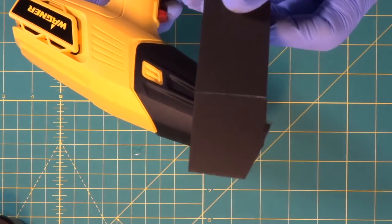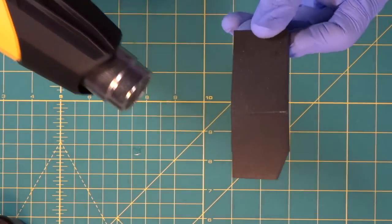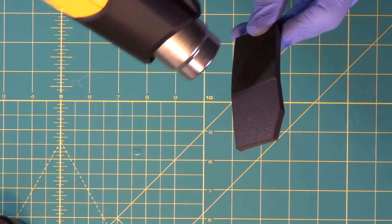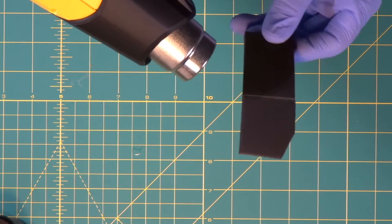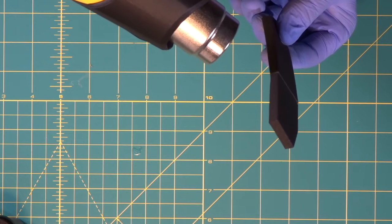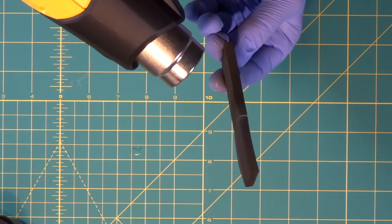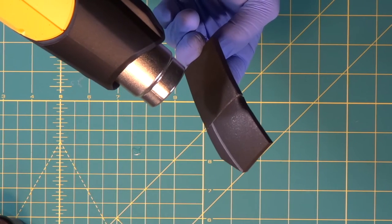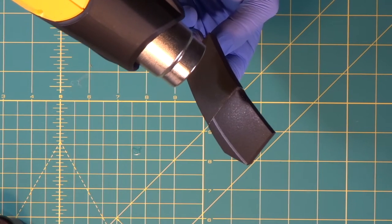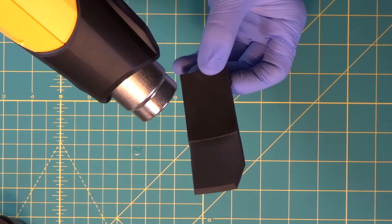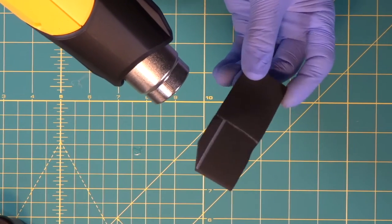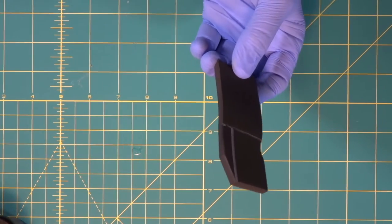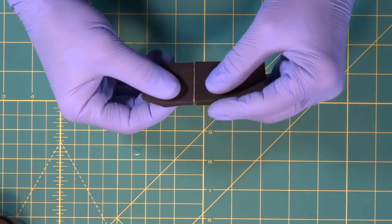The seam is already starting to come apart. Right in the middle there. Now if we keep going, that seam keeps opening further and further and further. See that? Look at the glue coming apart right there. You can see it coming apart right before our eyes. Wow, that is a mess right there.